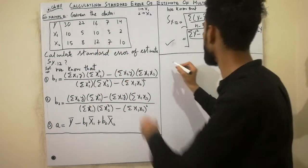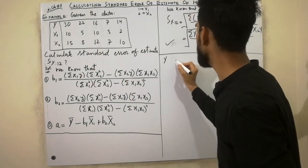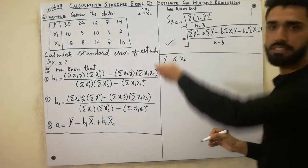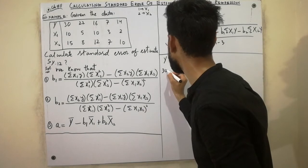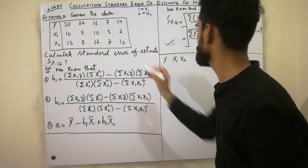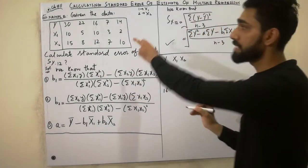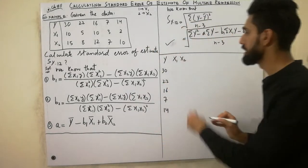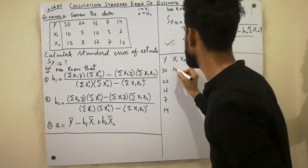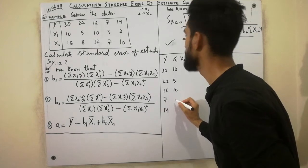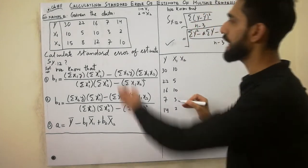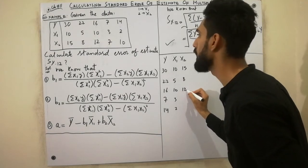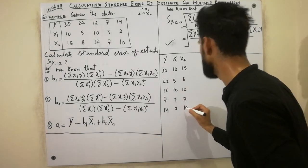The data given is y, x1, x2. The y values are: 30, 22, 16, 7, and 14. The x1 values are: 10, 5, 10, 3, and 2. The x2 values are: 15, 8, 12, 7, and 10.